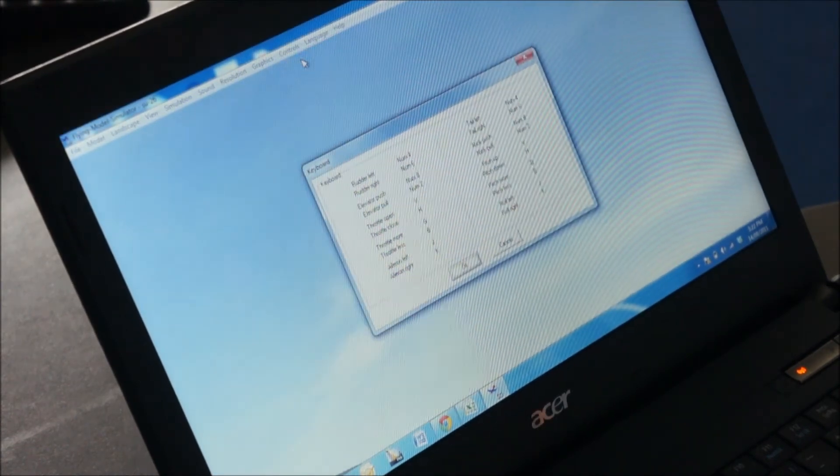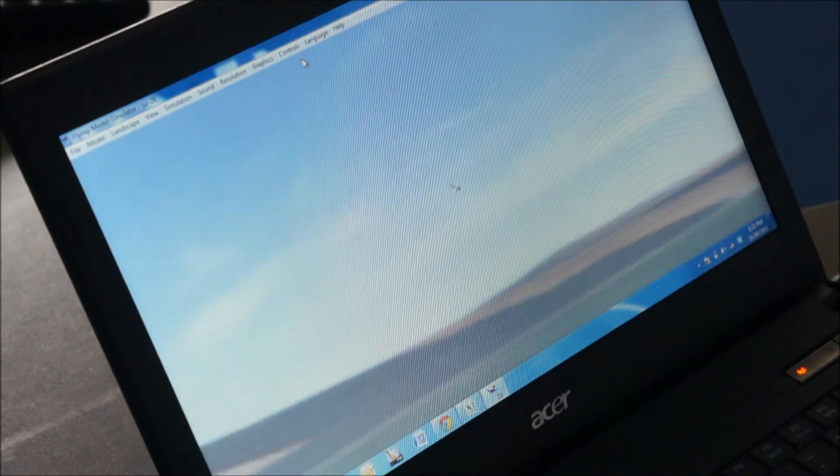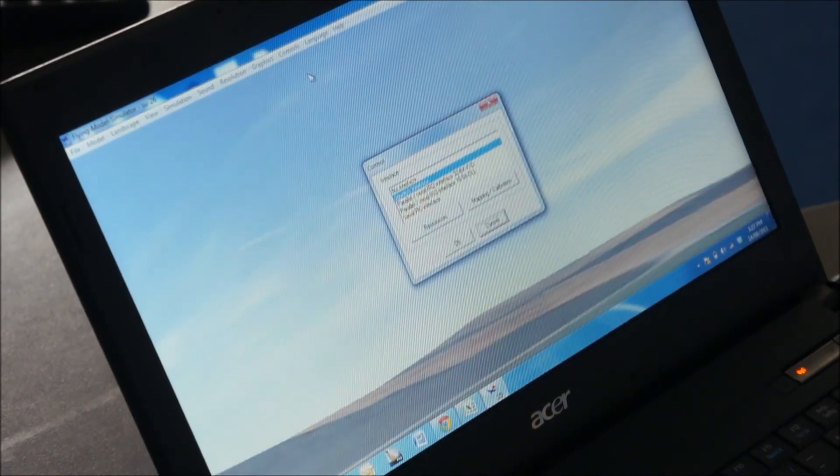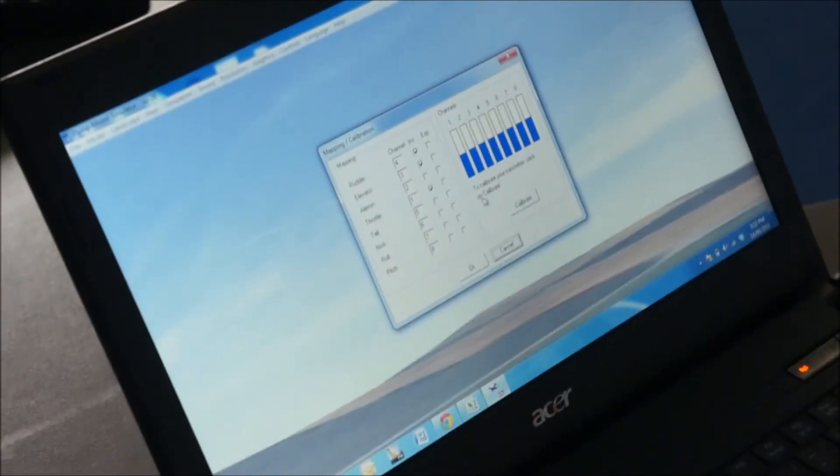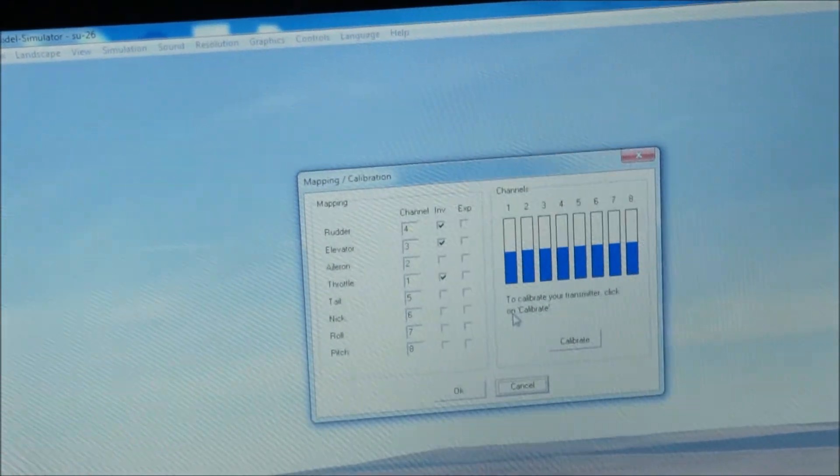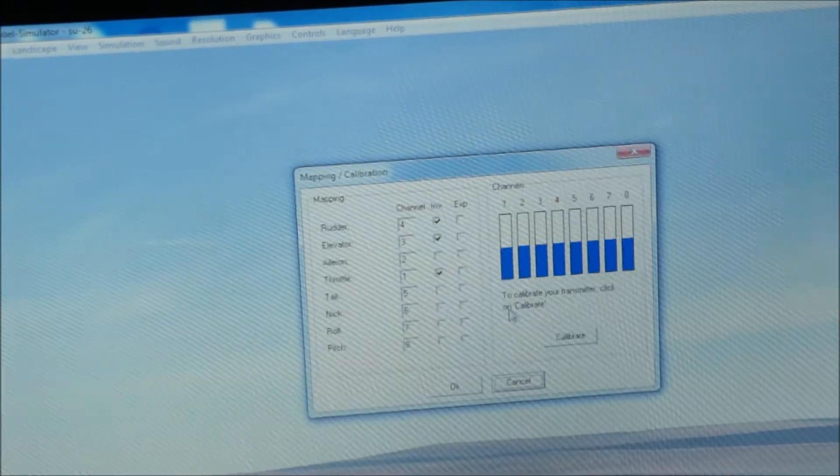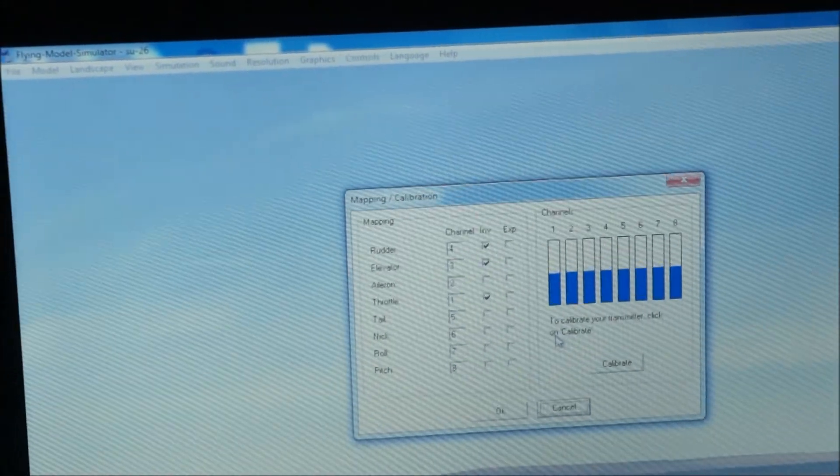Go to Analog Controls, Controls, Analog Controls, Joystick Interface, Mapping and Calibration. Now I've got rudder set to 4, elevator set to 3, aileron set to 2, and throttle set to 1. And the only one that's inverted is the aileron, or untick the aileron, and it should be set up.